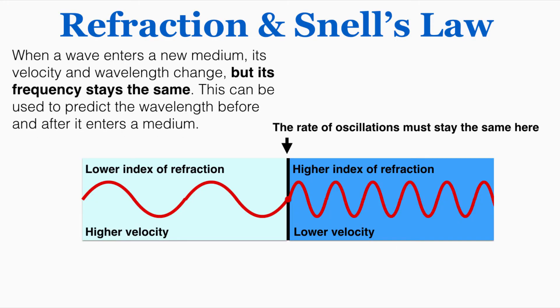When a wave enters a new medium, its velocity and wavelength change, but its frequency stays the same. This is a really important fact that comes up again and again in labs and on tests. This can be used to predict the wavelength before and after it enters a medium. So when a wave is moving from one medium to another, at the point that it's changing from one medium to another, that point must oscillate in the same way on both sides, otherwise the wave would kind of break up and form two different waves. So that one dot must oscillate up and down at the same rate on both sides of the medium. So that means that the frequency has to stay the same on both sides of the medium, but the velocity is changing, and so because the velocity is changing and the frequency is staying the same, the wavelength must also change to accommodate that.